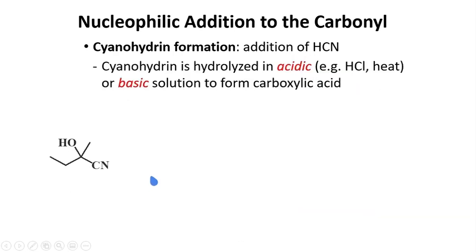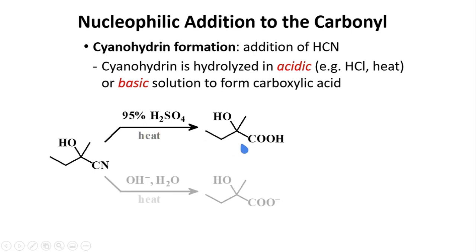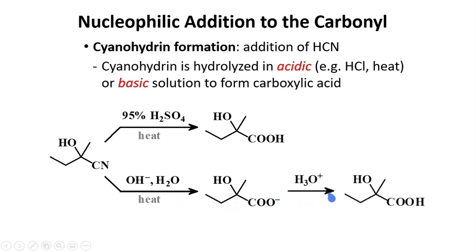Once you form your cyanohydrin, it can be hydrolyzed in acidic condition. One example is to use 95% sulfuric acid, and you can convert it to a carboxylic acid. A basic condition will also work. You will form a carboxylate, and addition of an acid will give you the carboxylic acid.